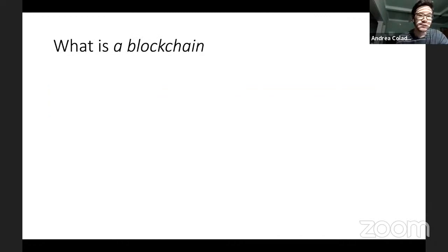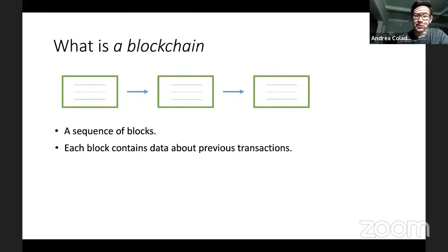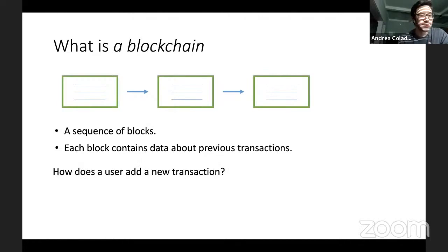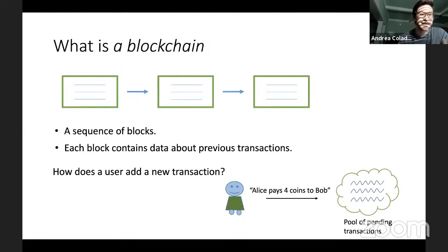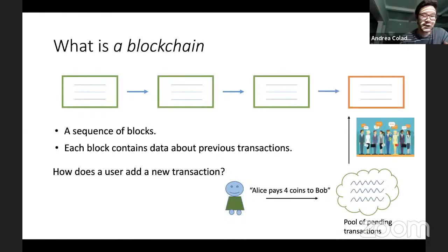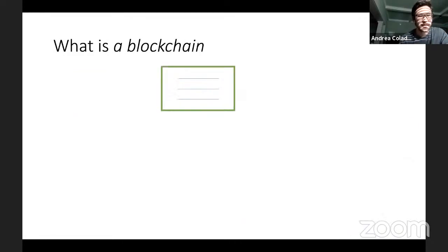The main ingredients of our payment system are blockchains and quantum money. A blockchain is a sequence of blocks, and each block contains information about some previous transactions. When a user wants to add a new transaction — say Alice wants to pay four coins to Bob — she broadcasts the transaction to the whole network. The transaction goes to a pool of pending transactions. Every once in a while, a new block is formed containing transactions from this pool via some consensus mechanism, and the new block is appended to the old sequence of blocks.